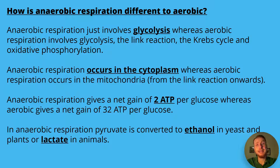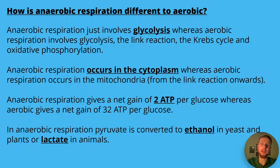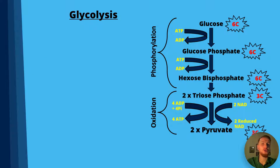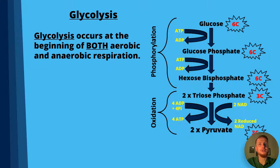In anaerobic respiration, pyruvate is converted to ethanol in yeast or lactate in animals. Let's have a closer look at glycolysis because it is the first stage of anaerobic respiration — it occurs at the beginning of both aerobic and anaerobic respiration.